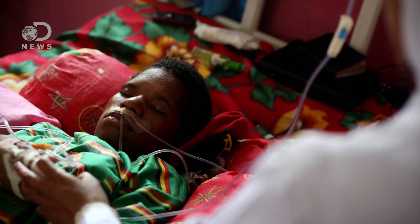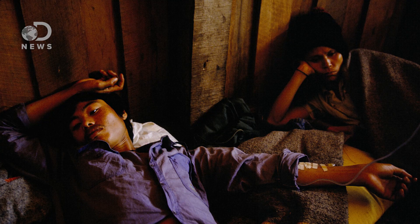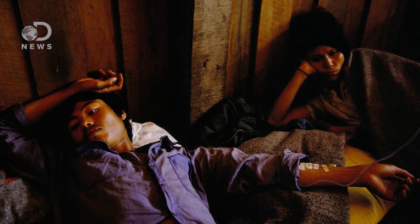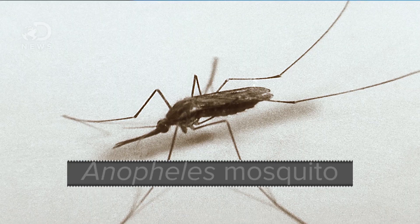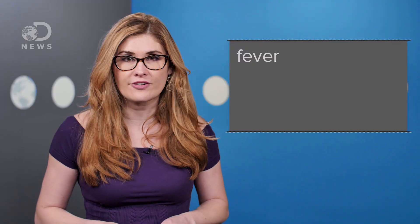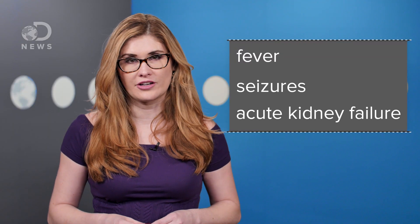Malaria is one of the most widely distributed diseases in the world, affecting over 200 million people and leading to 438,000 deaths worldwide in 2015 alone. The disease is caused by parasites that are spread to humans by female Anopheles mosquitoes. The symptoms can include fever, seizures, and acute kidney failure.